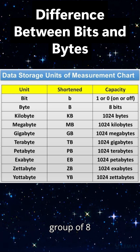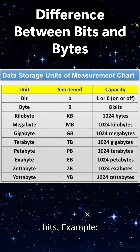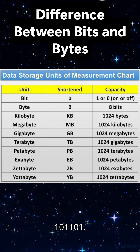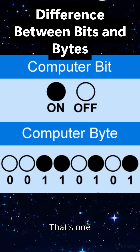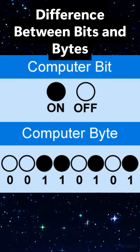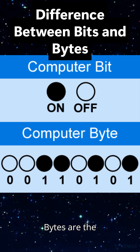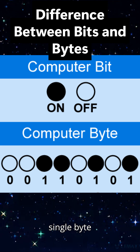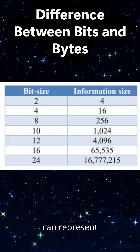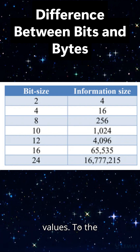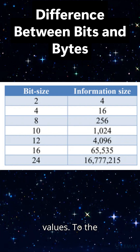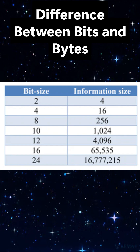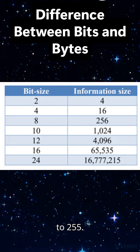A byte is a group of eight bits. For example, 10110101 — that's one byte, eight bits. Bytes are the basic unit for representing data in computing. A single byte can represent 256 different values: 2 to the power of 8 equals 256, ranging from 0 to 255.